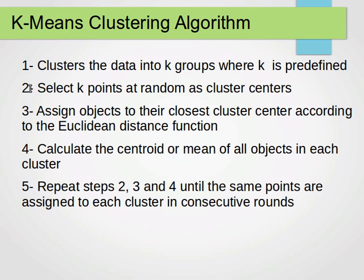After that, we calculate the centroid or the mean of all objects in each cluster. We keep repeating steps two, three, and four until the data does not change anymore. So select k points at random, then we assign objects to their closest cluster center according to the Euclidean distance. After that, we calculate the centroid or mean for all objects in each cluster and we keep repeating until the data stops changing.